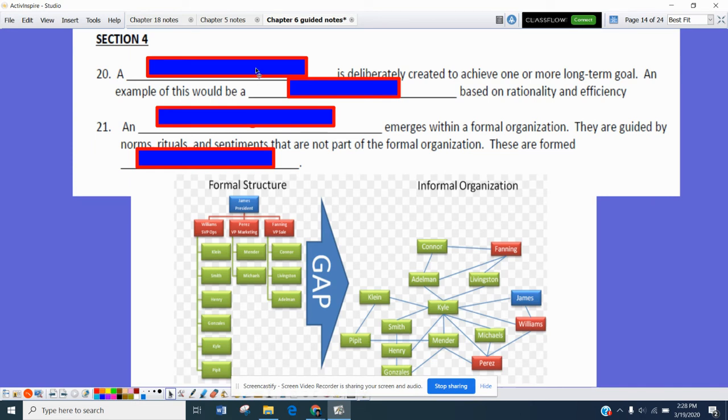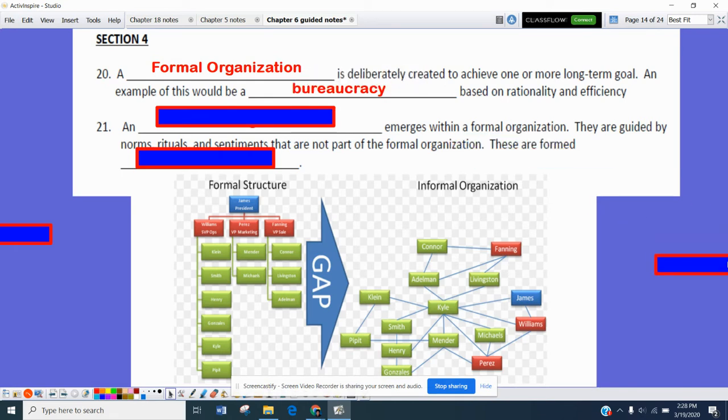In Section 4, starting with number 20, Formal Organizations, basically are deliberately created to achieve one or more long-term goal. An example of this would be our bureaucracy that is based on rationality and efficiency. That could be, for example, our U.S. government.